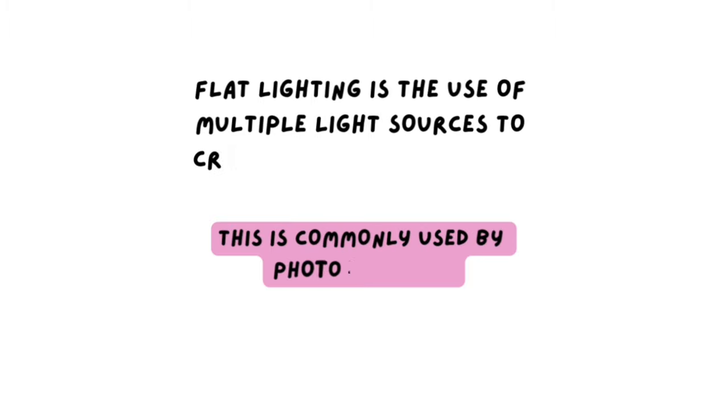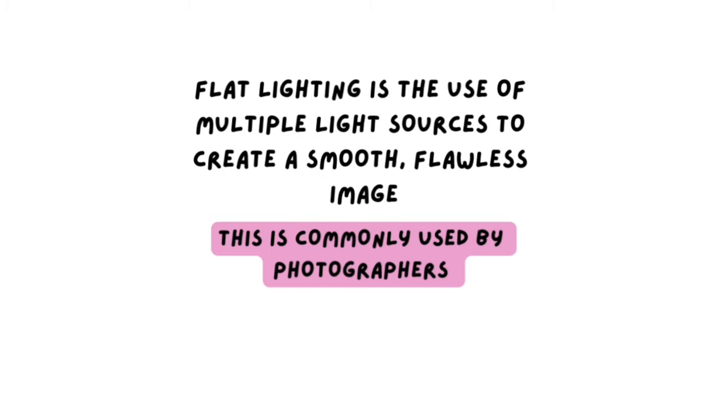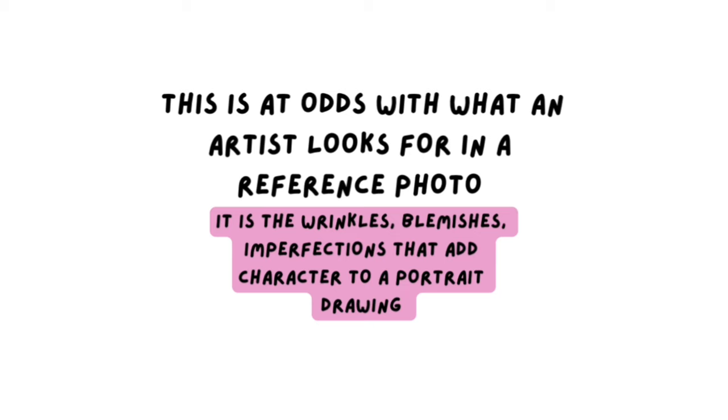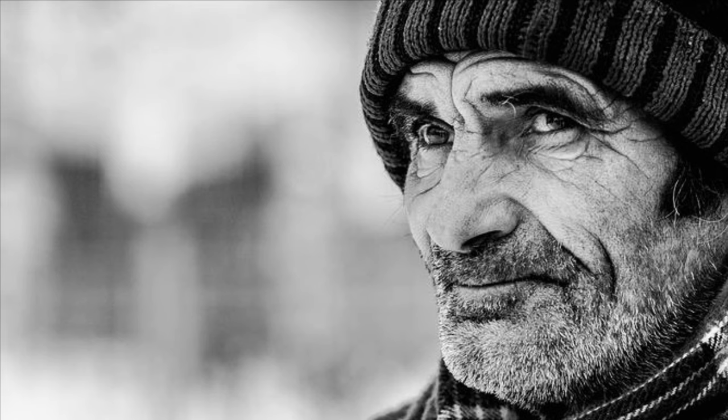Over-exposure on the other hand is the opposite — it means you lose all the mid-tones and end up with just a flat white image. The next thing to look out for is flat lighting. This is commonly used by photographers aiming to create an airbrushed, flawless finish, using lighting to remove lines or blemishes and create a really smooth result. This is completely at odds with what we as artists are looking for, because it's those lines, blemishes, wrinkles and how the light hits them that really gives the face character and makes an image interesting to draw with really interesting shadows.